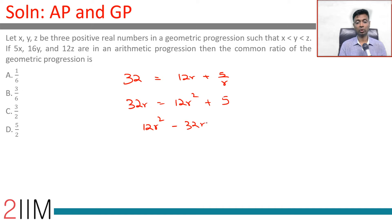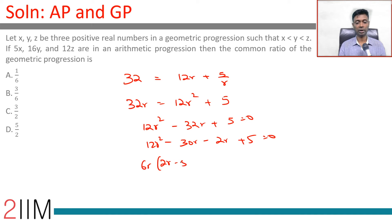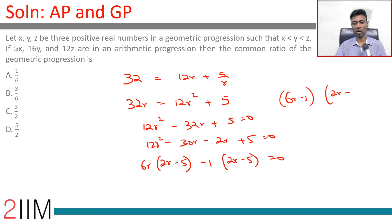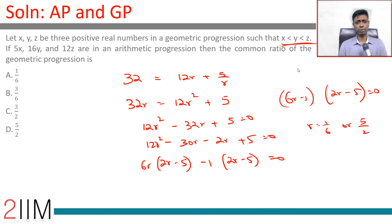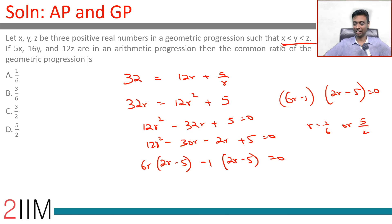Rearranging: 12r squared minus 32r plus 5 equals 0. Factoring: 12r squared minus 30r minus 2r plus 5 equals 0, giving 6r(2r minus 5) minus 1(2r minus 5) equals 0. So r is either 1 by 6 or 5 by 2. Since x less than y less than z, the common ratio must be greater than 1, so the common ratio is not 1 by 6 but 5 by 2.